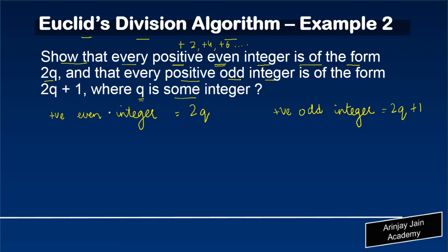Now, if you recall, by Euclid's division lemma, what we learnt was that a is equal to bq plus r.